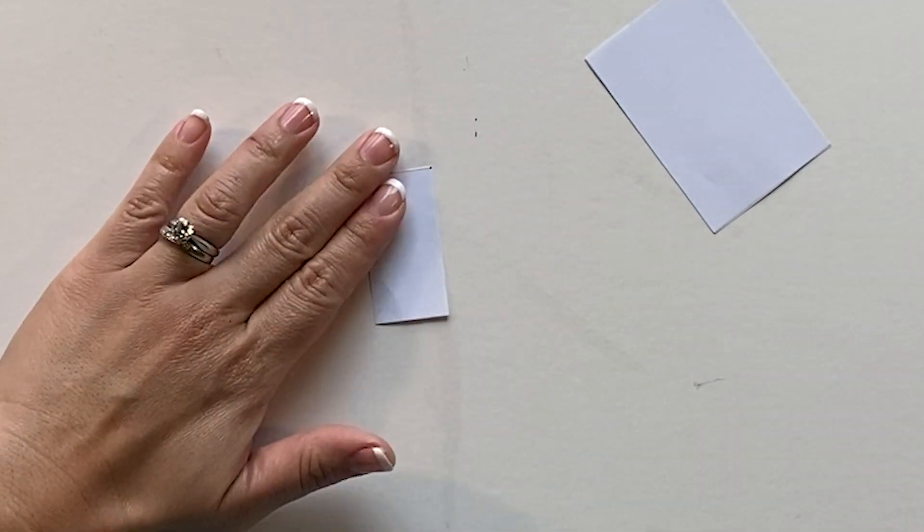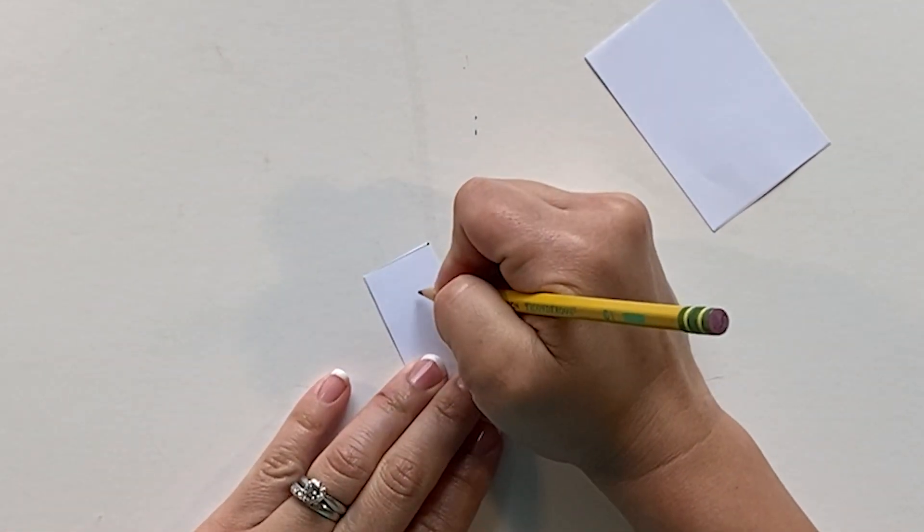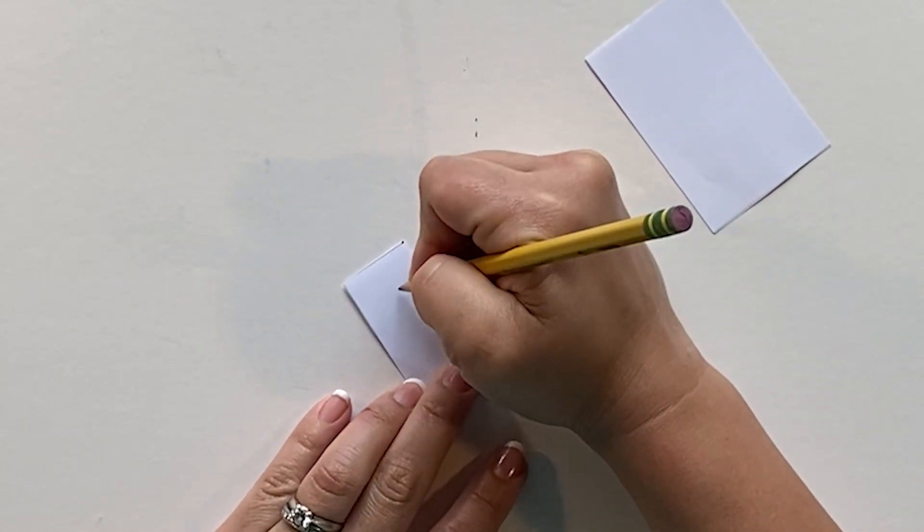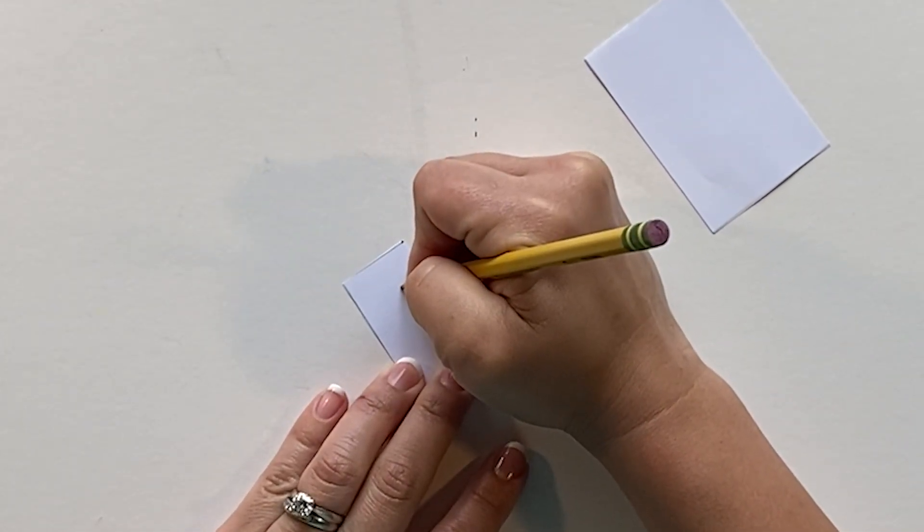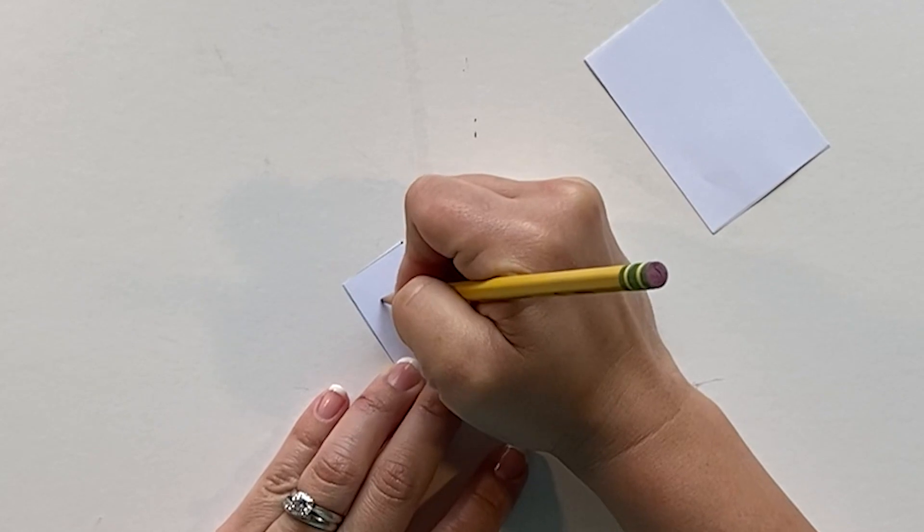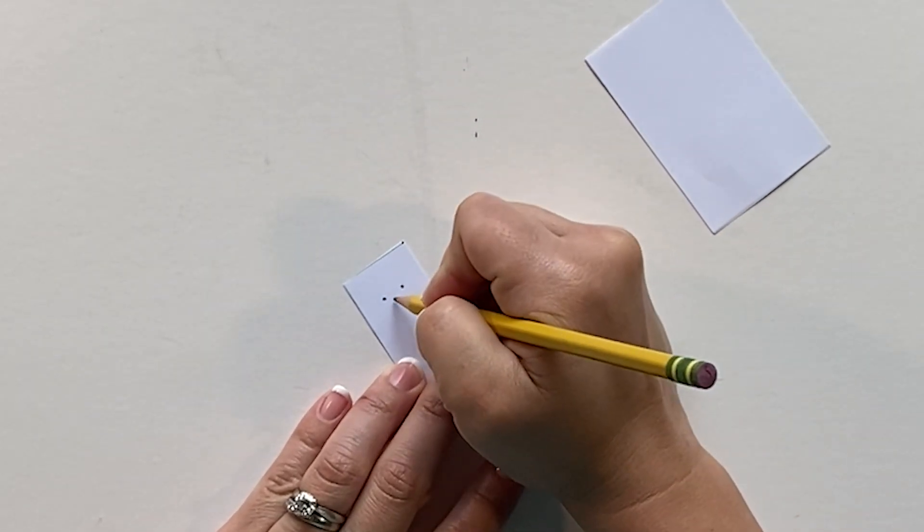Now we're going to do some drawing. For the little piece of paper that I have, we're going to make Jesus. Make it really simple. Two eyes like that, do a nose.